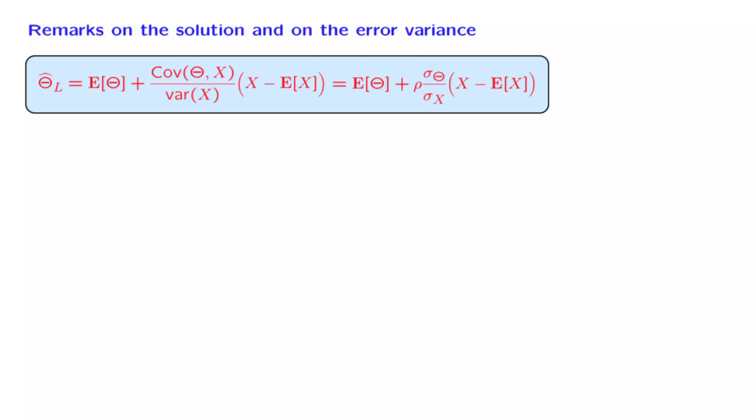The first important observation is the following. In order to implement this estimator, you do not really need to know everything about the distribution of x and theta. The only thing that you need to know is the mean of the two random variables that are involved, the variance of x, and the covariance of theta with x. So it's only a few pieces of information that we need.